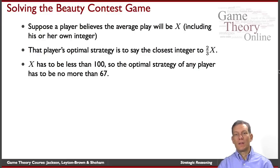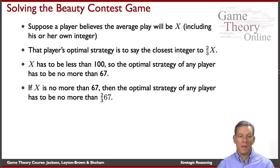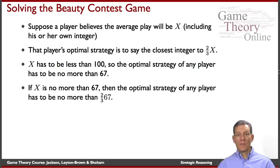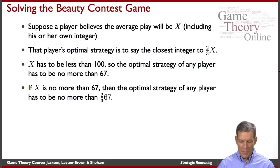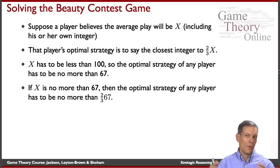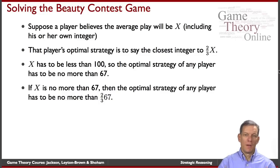That means that I can't think that the average is any higher than 67. So if the average x is no bigger than 67, then I should be naming no more than two-thirds of 67. If I think everybody else understands the game and understands that nobody should be naming a number bigger than 67, then nobody should be naming numbers bigger than two-thirds of 67.